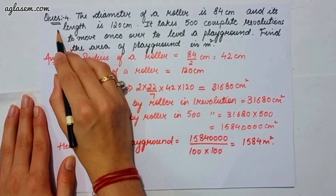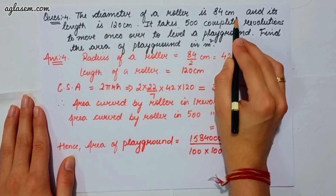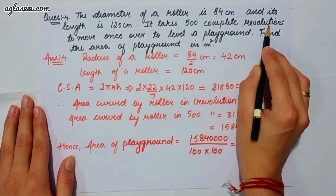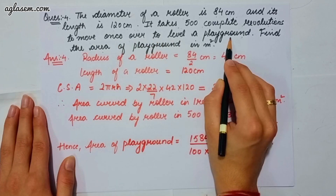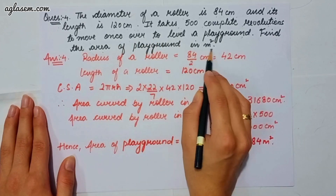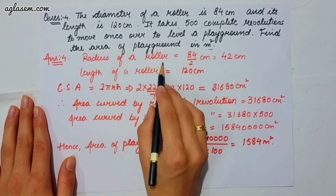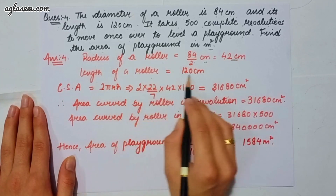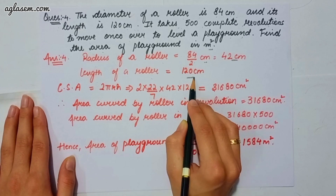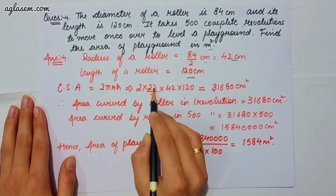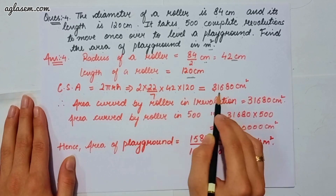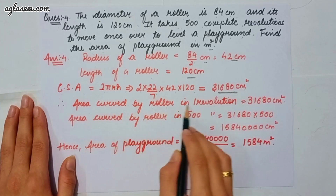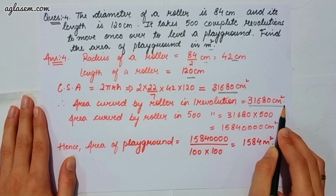Moving to the fourth question: the diameter of a roller is 84 cm and its length is 120 cm. It takes 500 complete revolutions to move once over a level playground. Radius of roller = 84 ÷ 2 = 42 cm, length = 120 cm. Lateral surface area = 2πrh = 2 × (22/7) × 42 × 120 = 31,680 cm². So the area covered by the roller in one revolution is 31,680 cm².